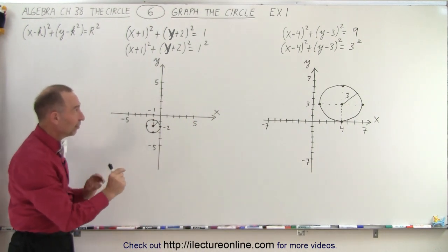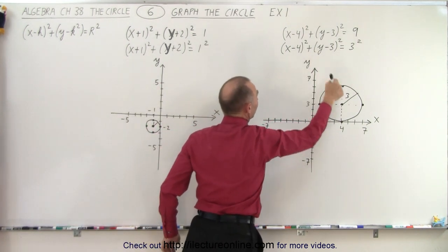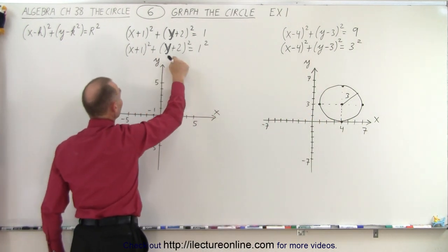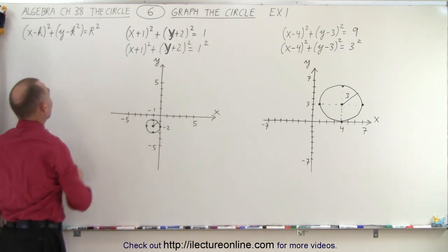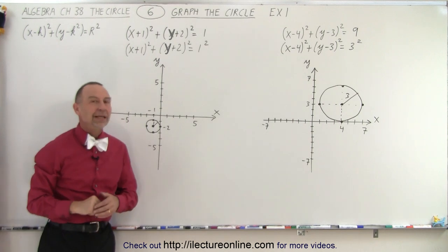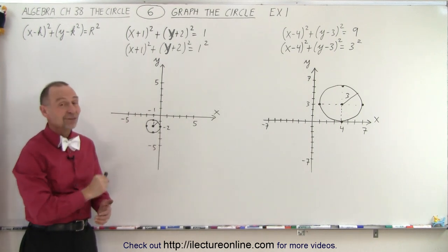Notice the difference when we have negative signs there, h and k are positive. We have positive signs there, h and k are negative. That's sometimes a little confusing. But remember, take a look at the general equation and then it begins to make sense. And that is how it's done.